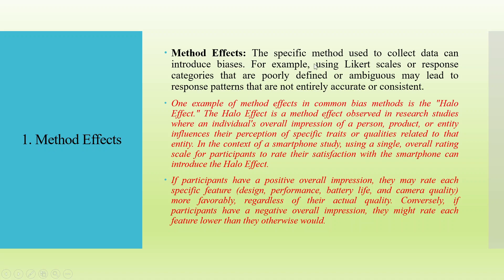The first reason is method effects. The specific method used to collect data can introduce bias. For example, using Likert scales or response categories that are poorly defined or ambiguous may lead to response patterns that are not entirely accurate or consistent. One example of method effects is the halo effect, where an individual's overall impression of a person, product, or entity influences their perception of specific traits. In a smartphone study, using a single overall rating scale can introduce the halo effect, causing participants to rate specific features — design, performance, battery life, and camera quality — more favorably regardless of their actual quality.